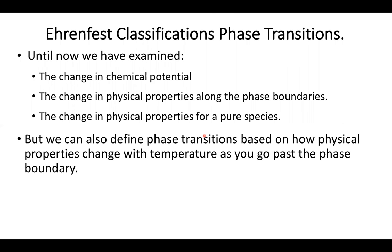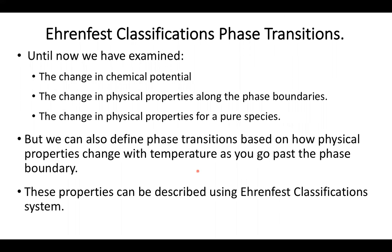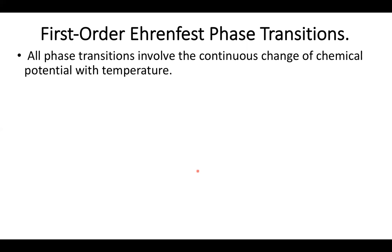One of the important things we also need to look at is how these physical properties can change as we essentially go past a phase boundary — as I heat a system from one phase to another. What sort of changes in physical and thermodynamic properties can I expect? The definitions of how these properties change across a phase boundary form the building blocks of what's called the Ehrenfest classification system, which describes how the properties of a substance change as I go past a phase transition.